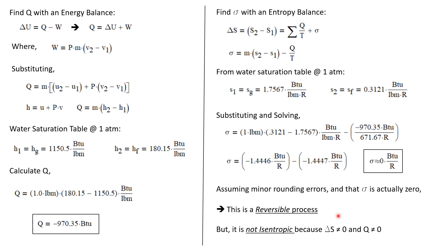But as we discussed in a prior problem when we introduced the isentropic term, it may be a reversible process with no entropy production, but it is not an isentropic process, because that would also require delta S to equal zero and Q to equal zero, and neither of those values is zero.